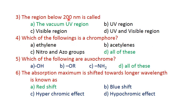Question number three: the region below 2000 nanometers is called the vacuum UV region. The following groups are chromophores — nitro and azo groups are chromophores.